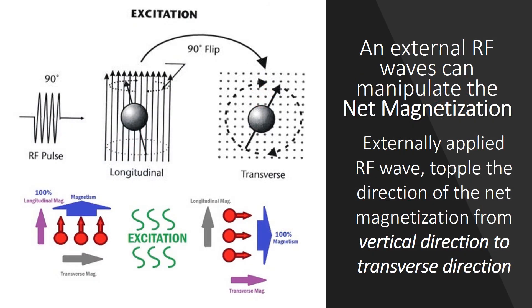An external RF wave can manipulate the net magnetization. Externally applied RF wave topples the direction of the net magnetization from vertical direction to transverse direction.